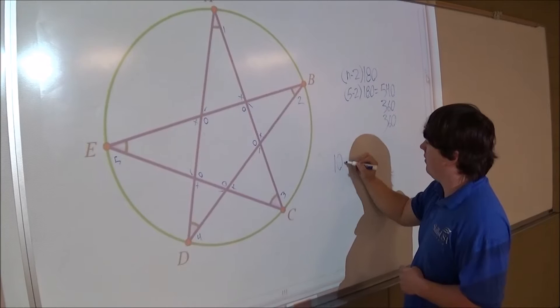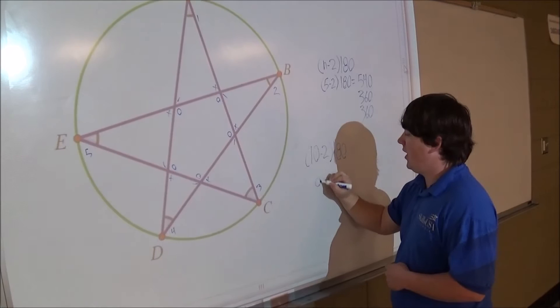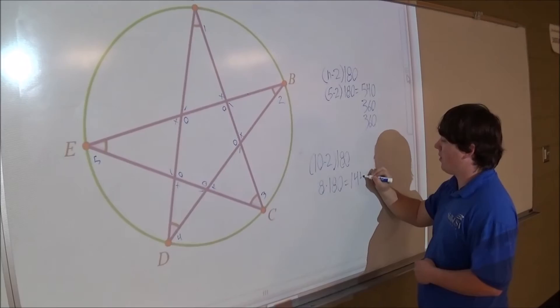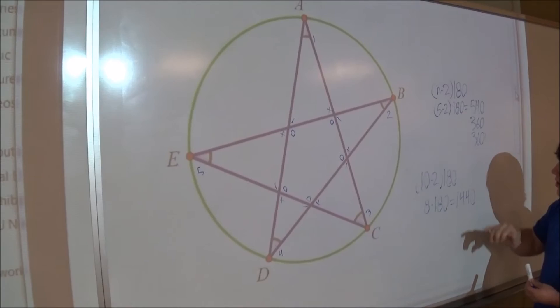Plugging in the formula again, 10 minus 2 times 180, and you get 8 times 180 which equals 1440. So the total amount of all interior angles inside that 10 sided shape is 1440.